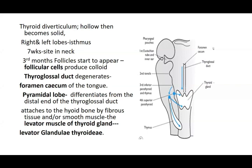The duct linking the thyroid gland above to the tongue is called the thyroglossal duct — because it connects the thyroid below to the tongue above. In the third month, follicles start to appear and produce colloid. The thyroglossal duct then degenerates; only the opening at the foramen cecum remains as a landmark. This is the point at the junction of the anterior two-thirds and posterior one-third of the tongue where the diverticulum originated.